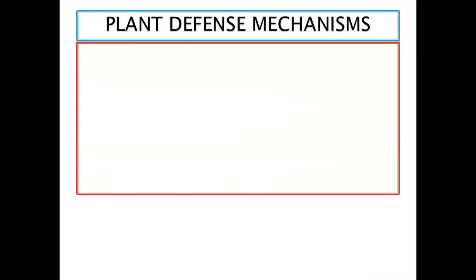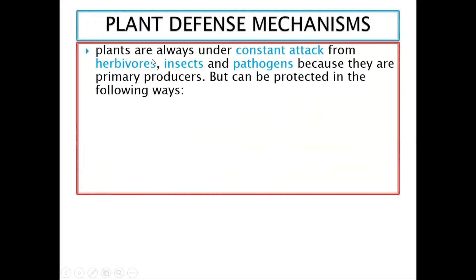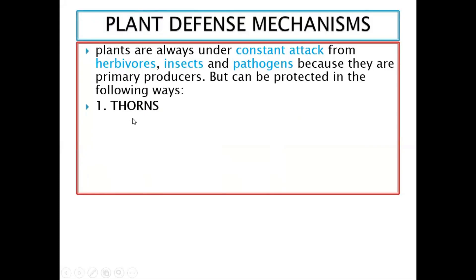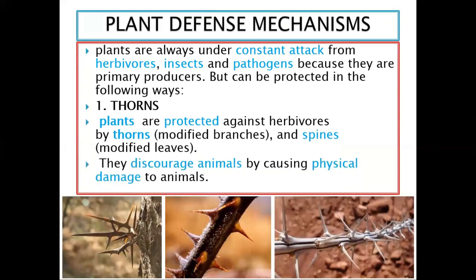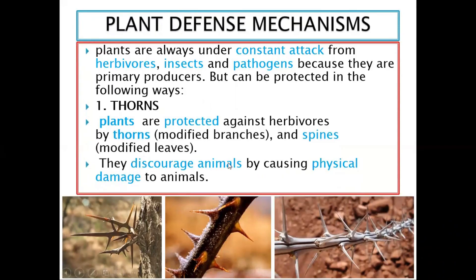What are some of the defense mechanisms of plants? Plants are always under constant attack — from herbivores, insects, pathogens, and even human beings who eat them as primary producers. Number one is the introduction of thorns. Plants are protected against herbivores by thorns, modified branches, and spines. Spines are modified leaves with thorn-like structures — they are piercing and discourage animals by causing physical damage. Look at a rose plant — it is surrounded by thorns to prevent it from being attacked.